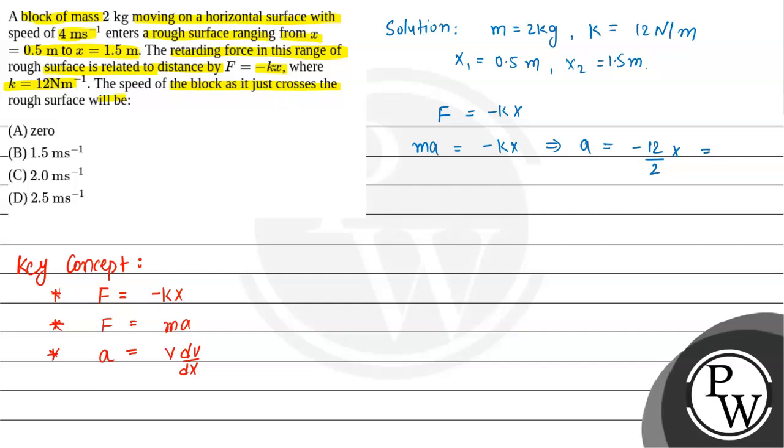x is the variable here. So this will become minus 6 times x. A is equal to minus 6 times x. So this will be, again we can write, v dv equal to minus 6 x dx.